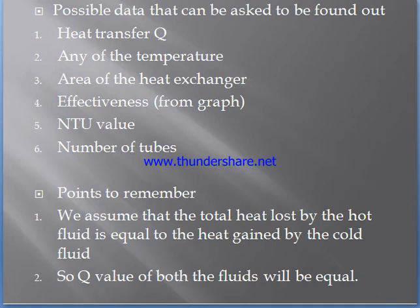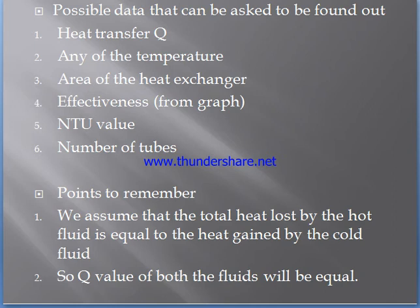If any three temperatures are given, the fourth temperature has to be found using Q = mCp·ΔT. The heat lost by the hot fluid equals the heat gained by the cold fluid, so Q_hot = Q_cold. Using Q = mCp(T2 - T1) for the hot fluid equal to Q = mCp(t2 - t1) for the cold fluid, the unknown temperature can be easily found out. This is how we find the fourth temperature in the LMTD method.